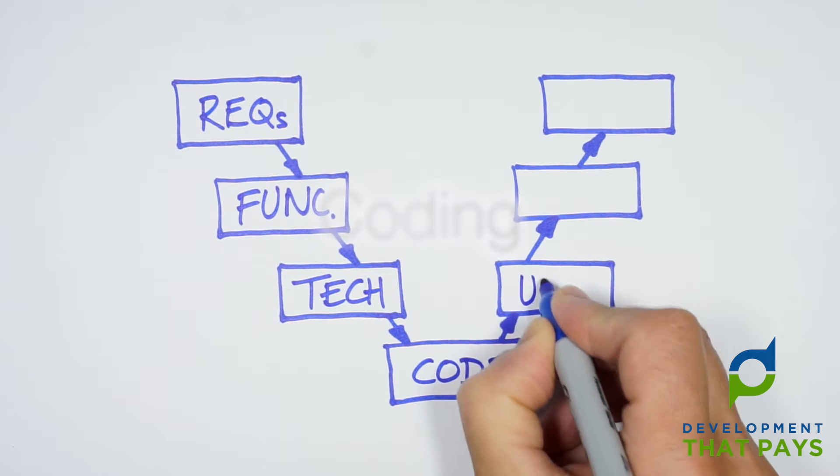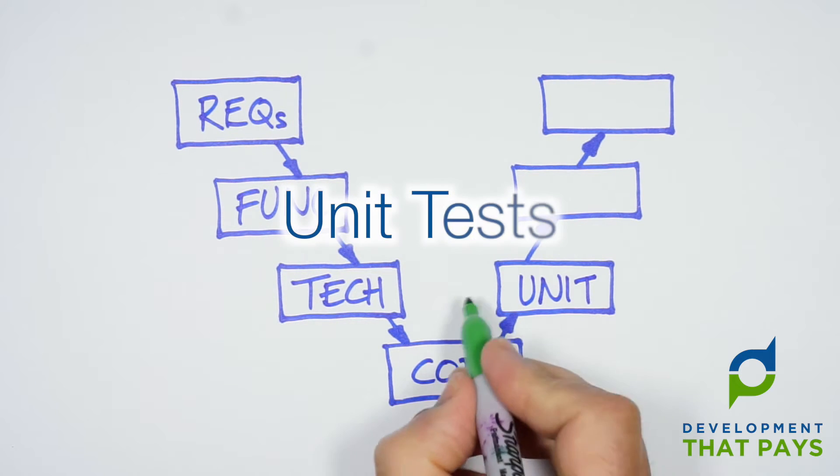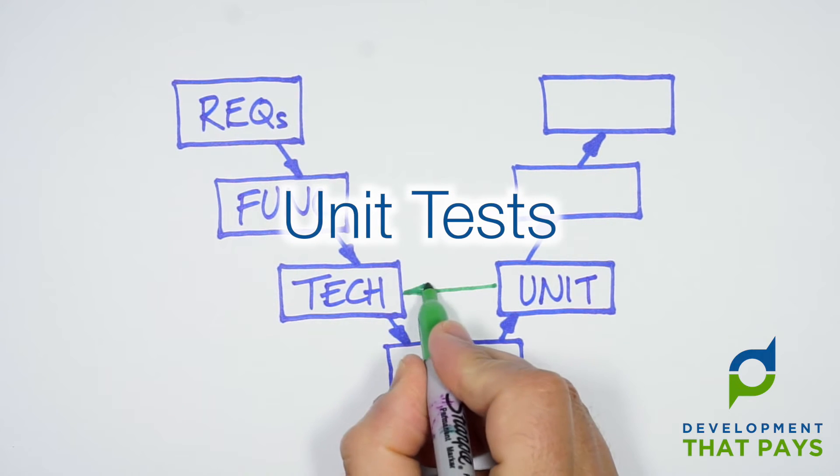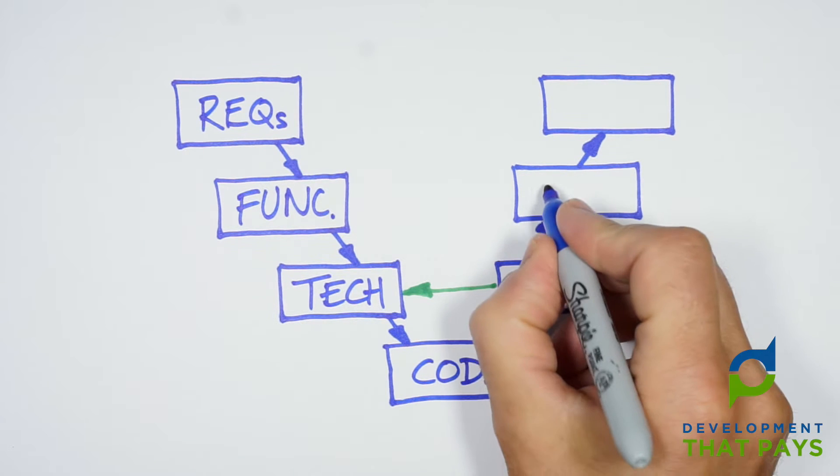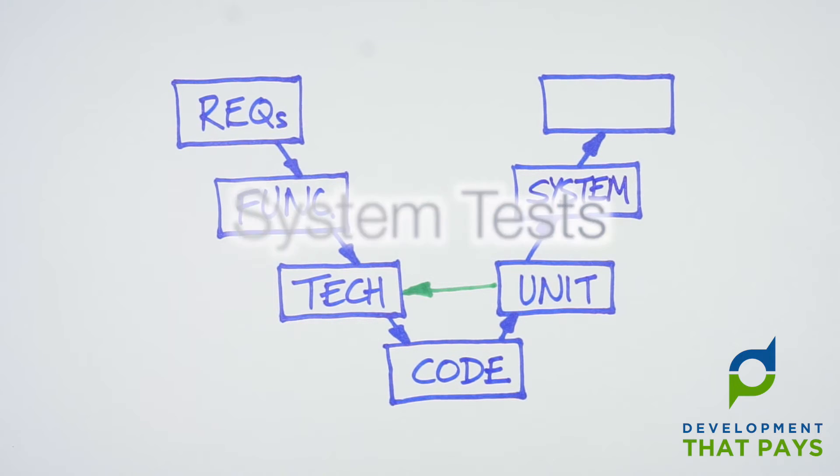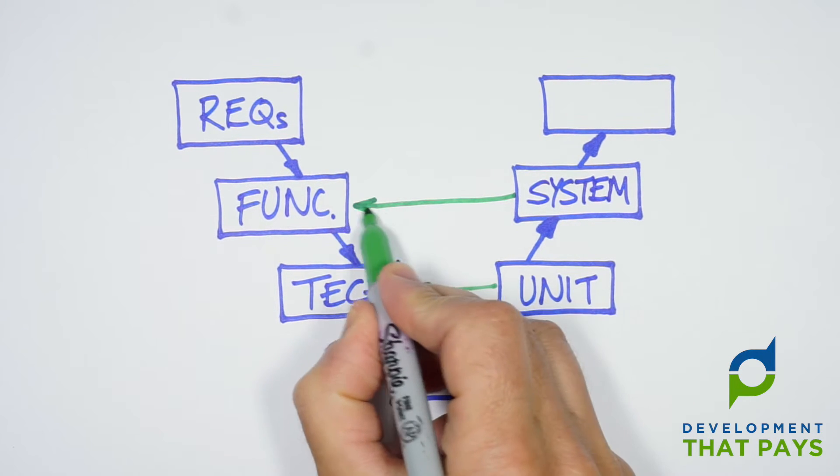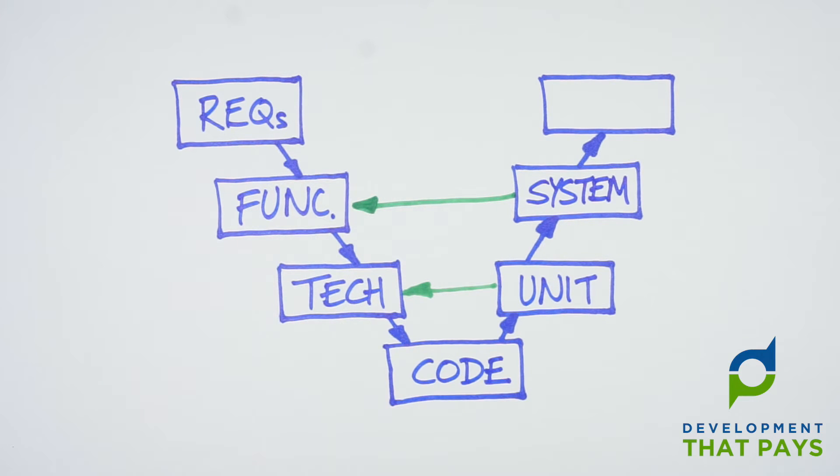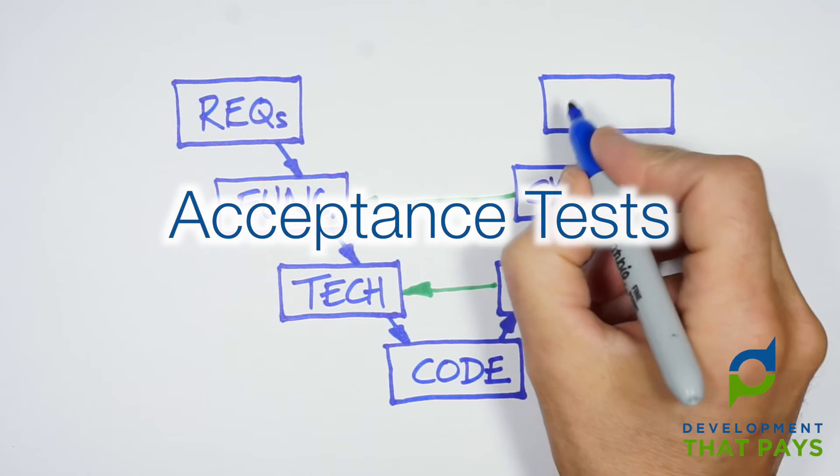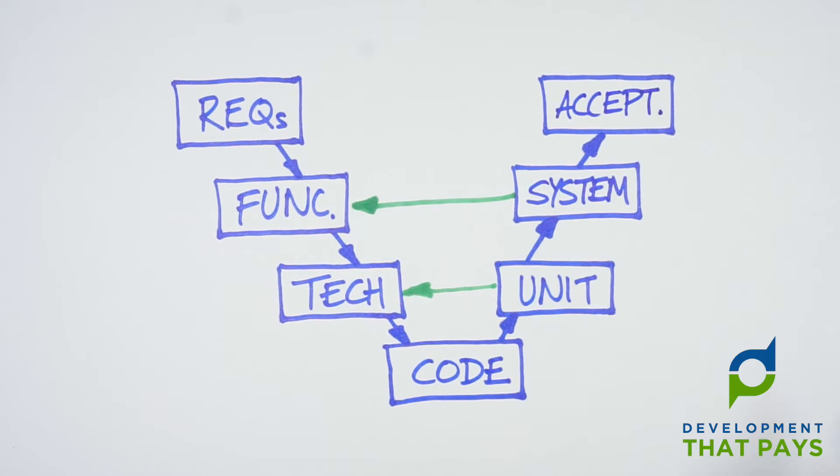Then as we move back up the right hand side of the V, we verify at every stage. So unit tests verifying the technical design. System tests verifying the functional design. And acceptance tests or user acceptance tests verifying the requirements definition.